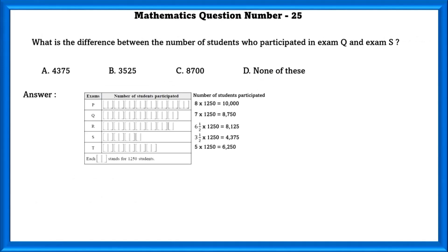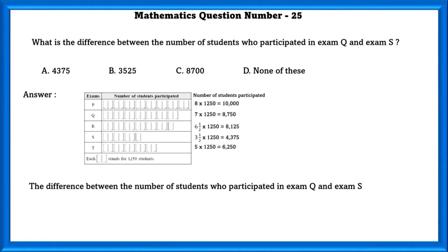What is the difference between the number of students who participated in exam Q and exam S? The difference between the students who participated in exam Q and S is equal to 4,375.